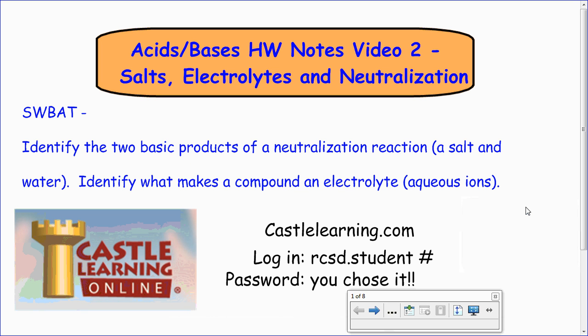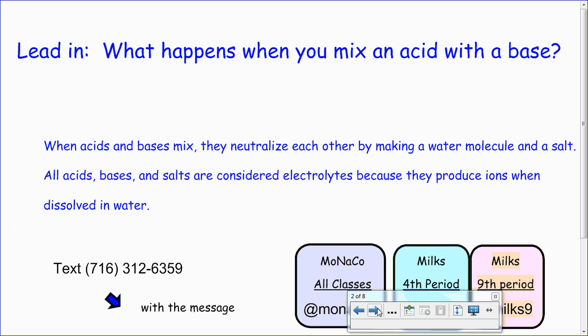Hello friends, Monaco here. Our second lecture in our acid-base unit. In the previous video we talked about how acids and bases neutralize and how they make salt plus water. We're going to go into a little more depth on that idea, plus what an electrolyte is. You'll be able to identify the basic parts of a neutralization reaction — salt and water — and identify what makes a compound an electrolyte. We're going to go into depth about those ions.